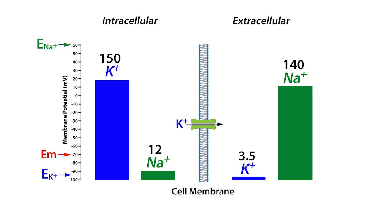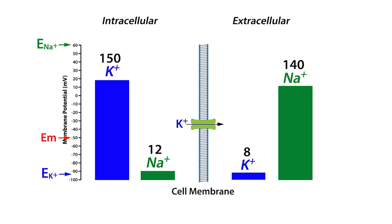Now, because the cell is mostly permeable to potassium ions, it means that changes in intracellular and extracellular potassium ion concentration will have a more profound effect on the resting membrane potential than changes in the intracellular and extracellular sodium ion concentration. For example, increasing the extracellular potassium concentration from 3.5 to 8 mEq per liter causes the resting membrane potential to become less negative — in other words, it shifts it from minus 70 mV to approximately minus 50 mV — while the potassium equilibrium potential shifts an equivalent amount, from minus 95 to minus 75 mV.